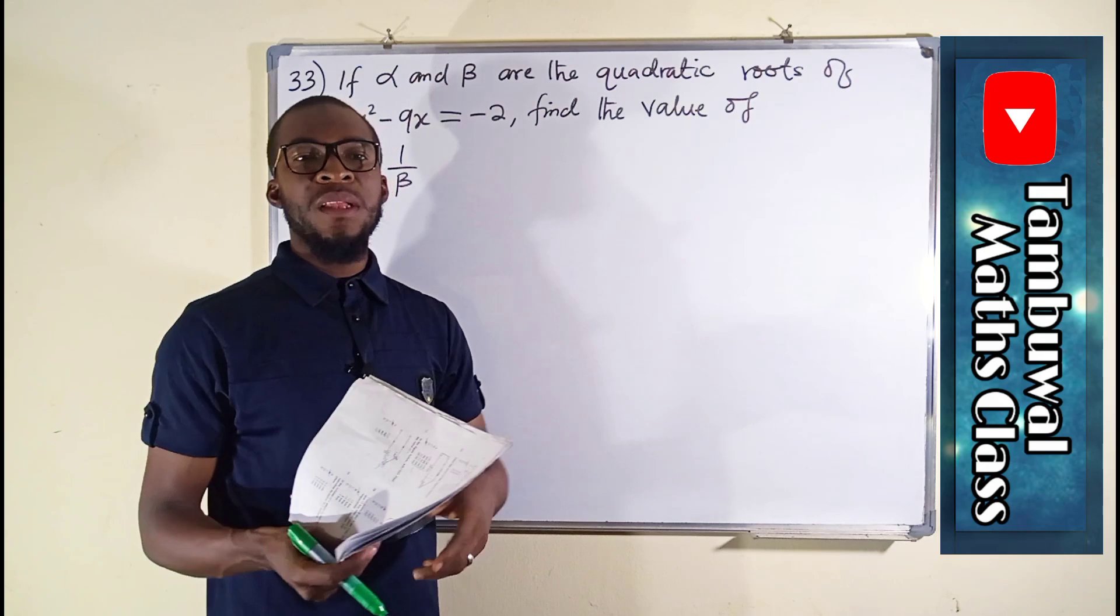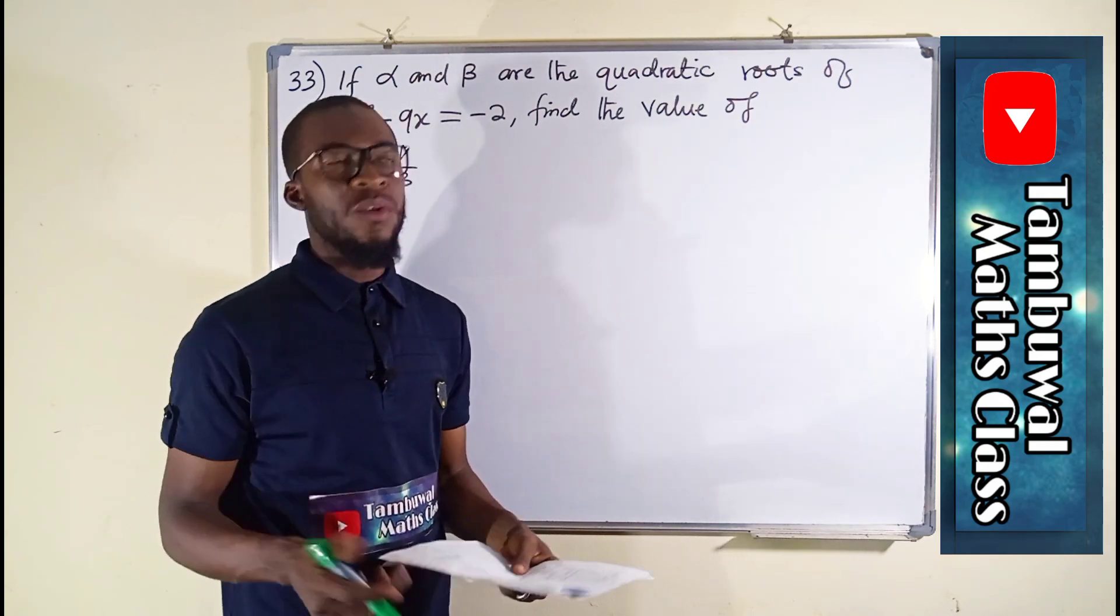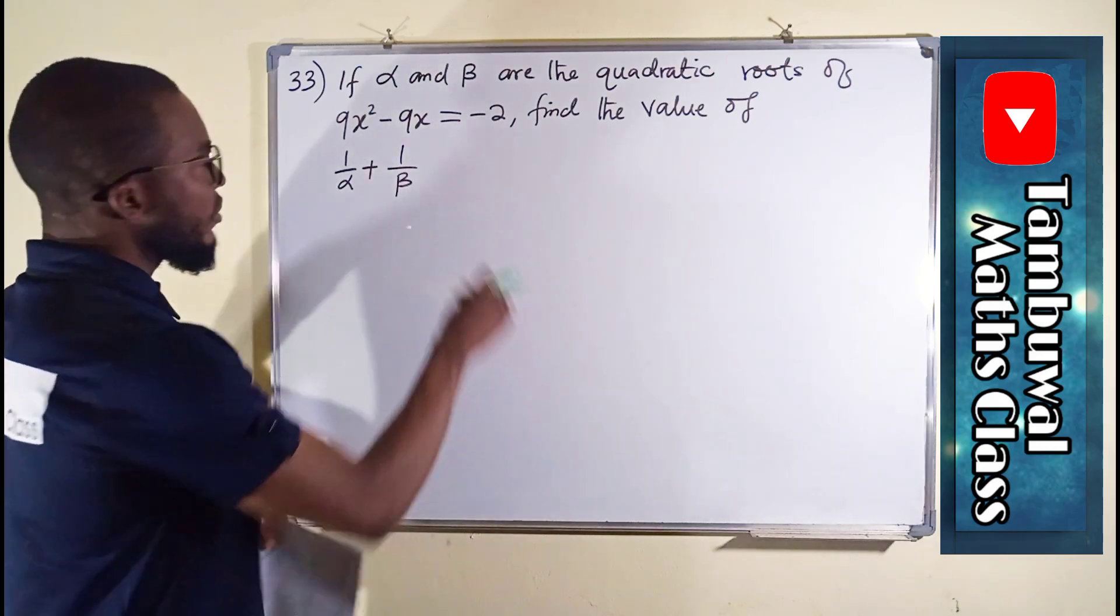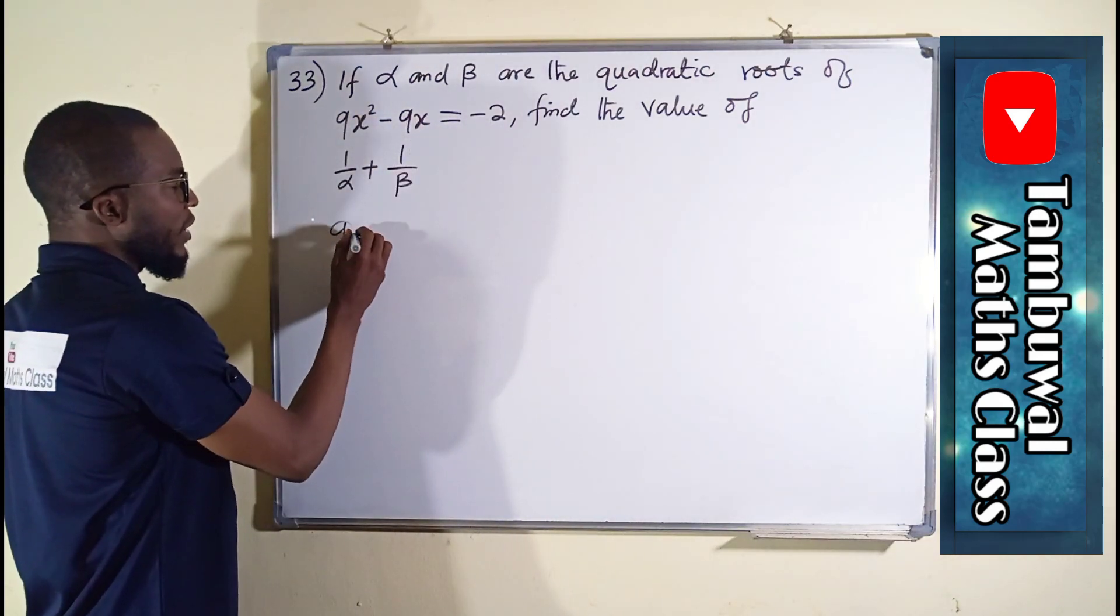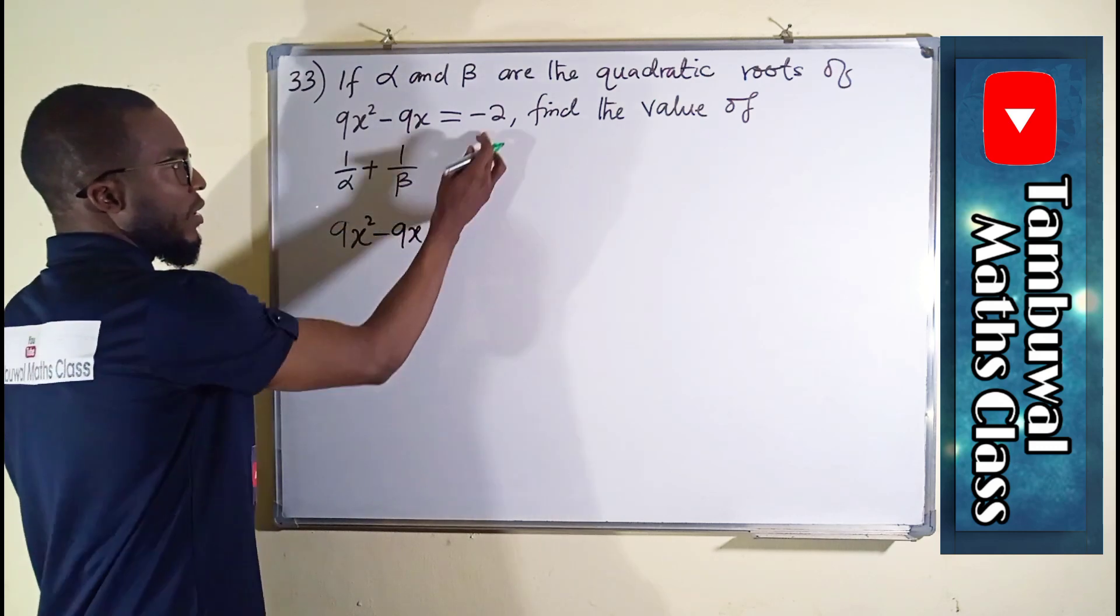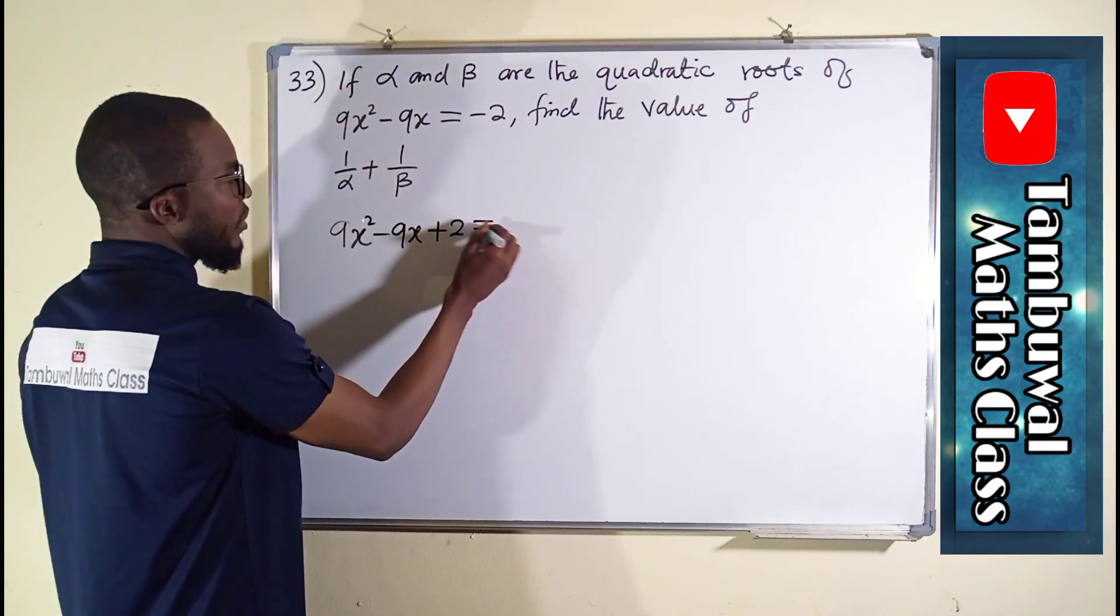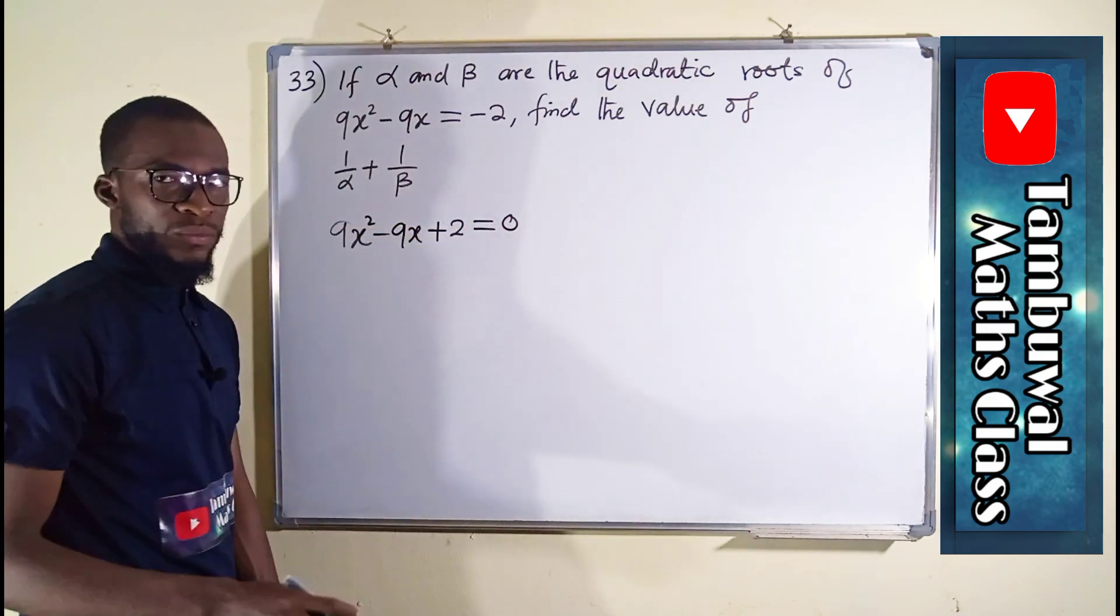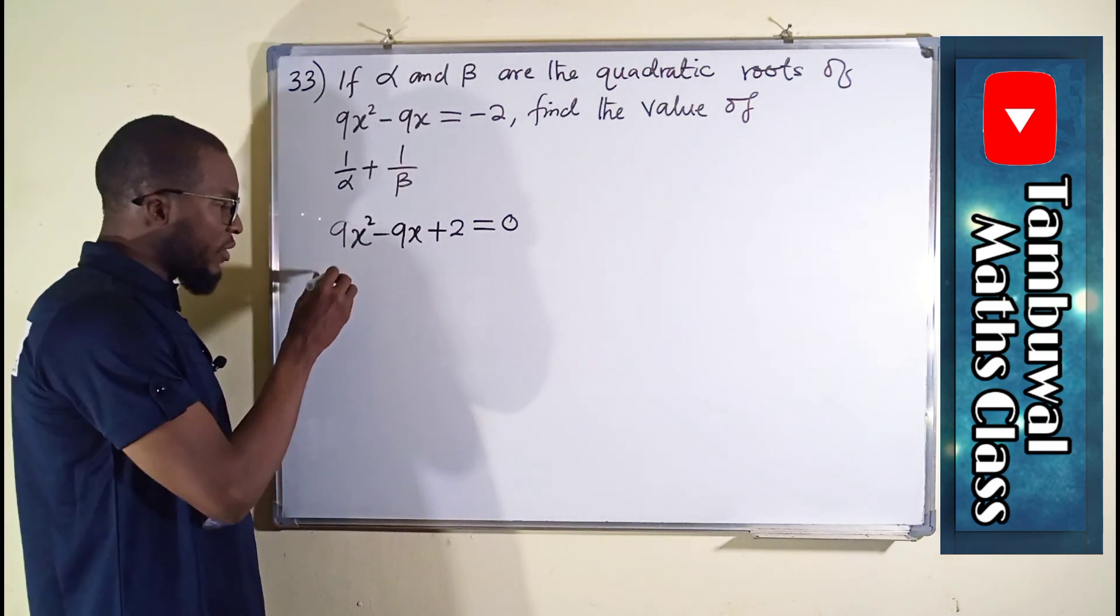So let us rearrange this quadratic equation. We have 9x squared minus 9x. If negative 2 comes back, it becomes positive 2. And to the right we have nothing except 0. So now let us break down our data.